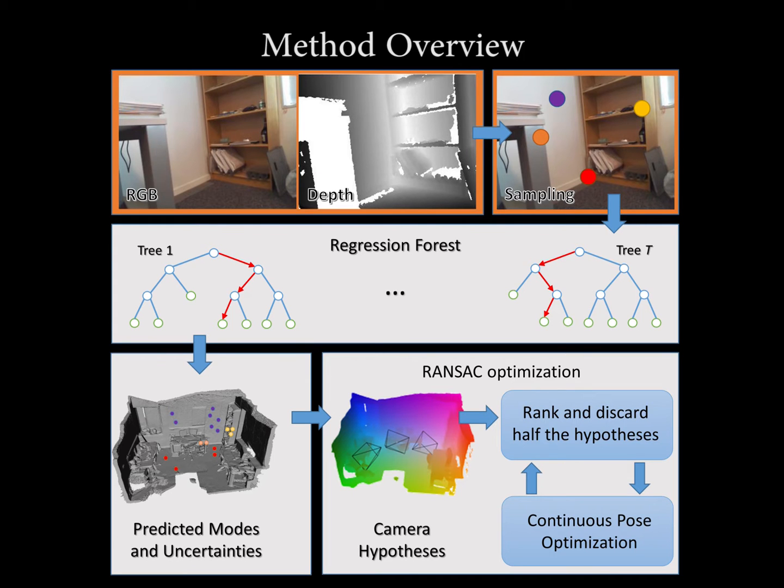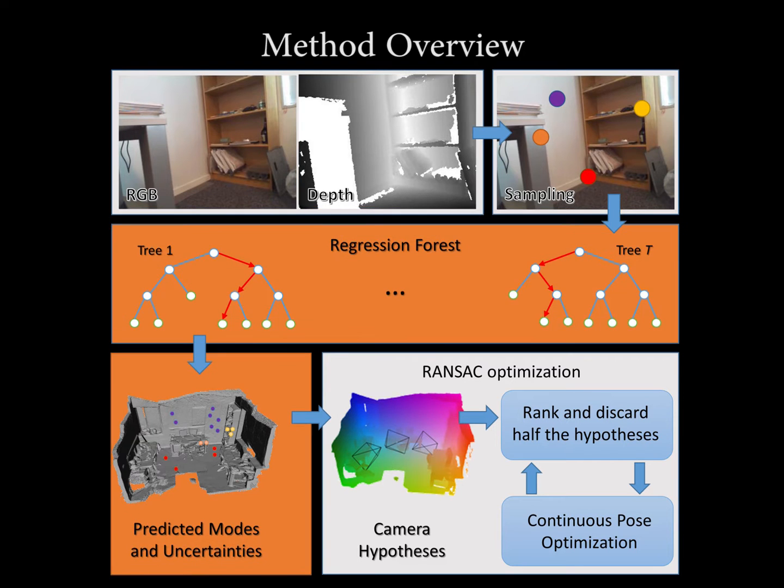Given an RGBD image with unknown pose, we first randomly sample the input image. Each sample is then passed down a regression forest that predicts a probability density function of the 3D location within the scene.